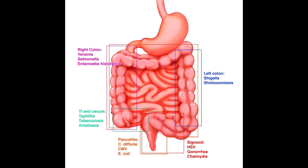In the right colon, which includes the cecum and the more general area here, we have Yersinia, Salmonella, and Entamoeba histolytica. This is an example on CT where we can see wall thickening around this area, and that could alert us that this is the organism affecting this region.